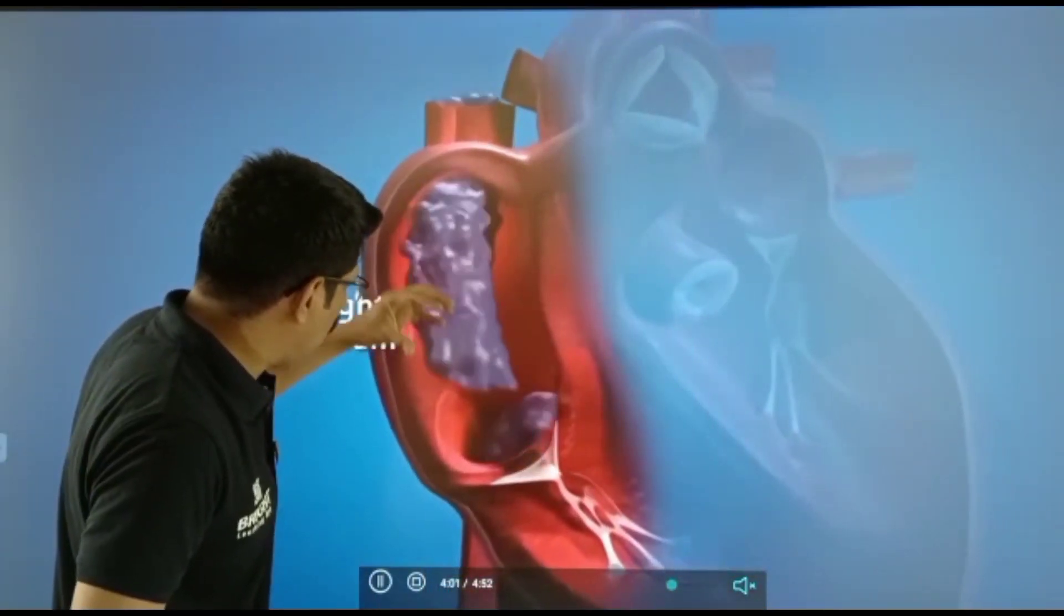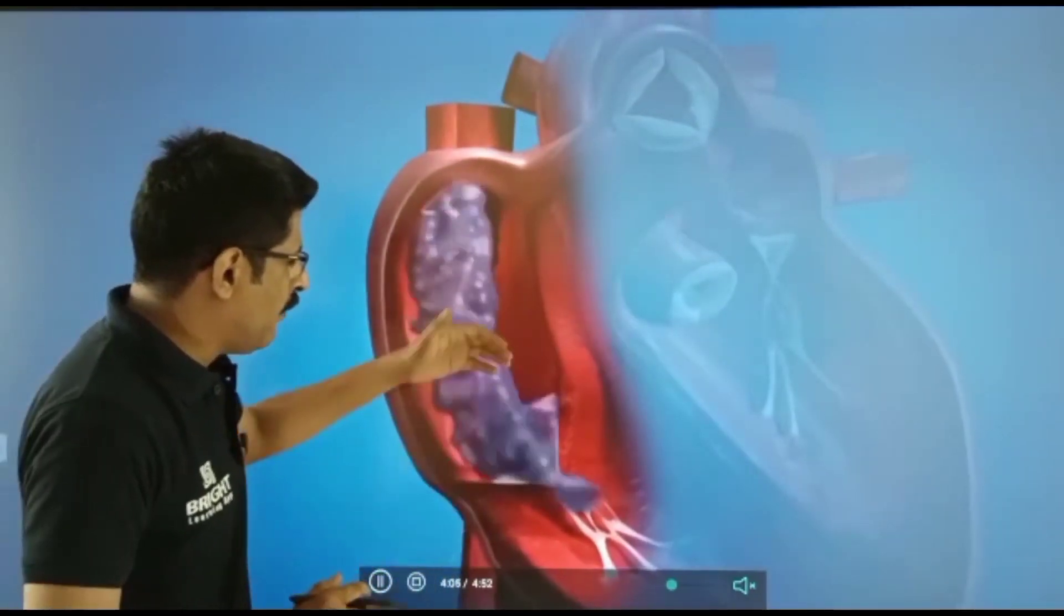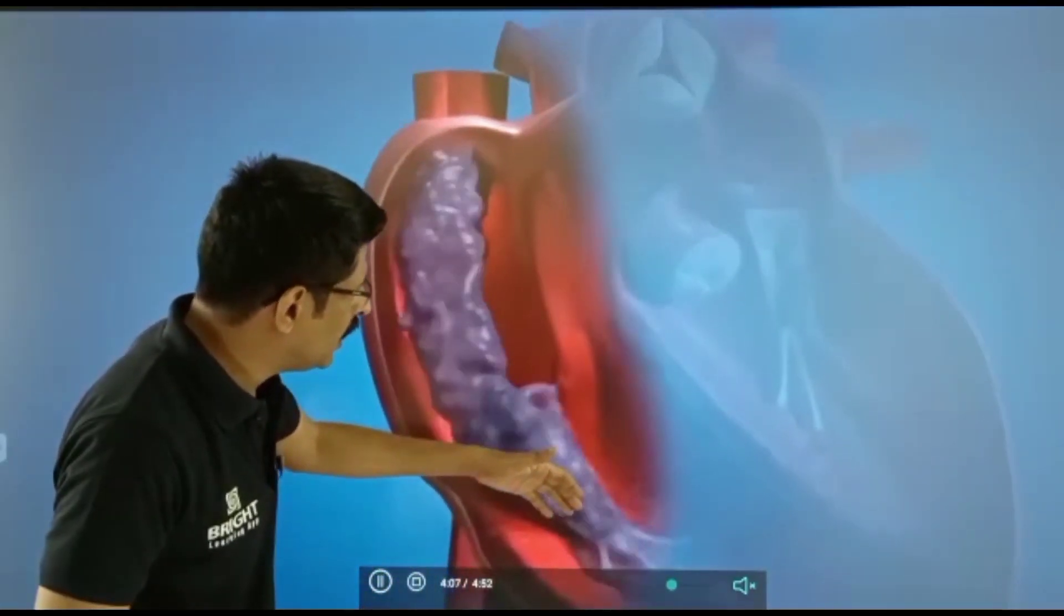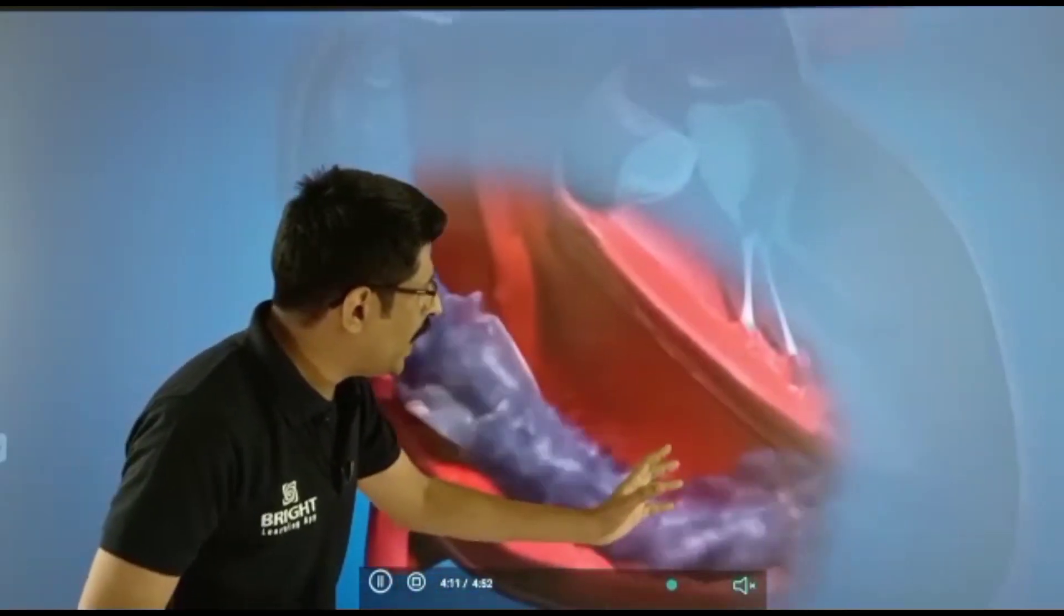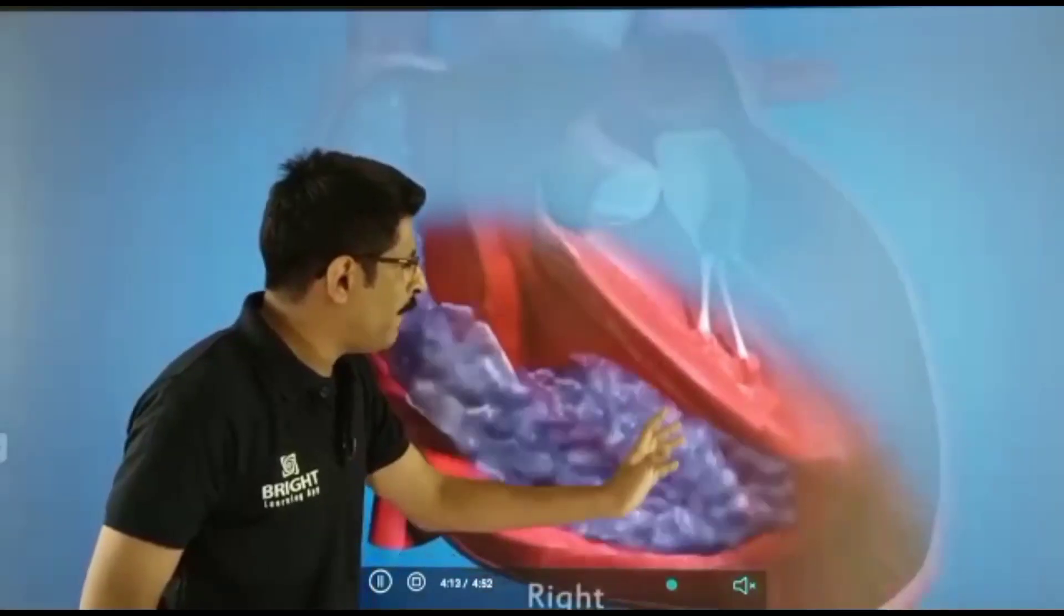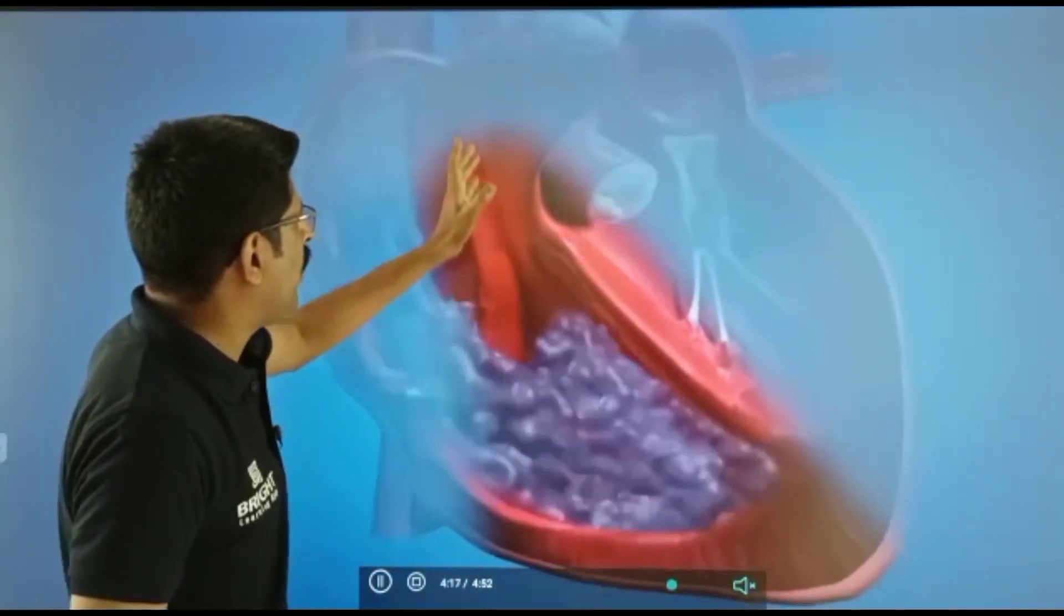From the right atrium, the deoxygenated blood moves into the right ventricle. From the right ventricle, the deoxygenated blood is pumped into the pulmonary artery.